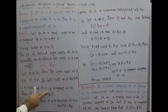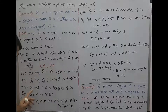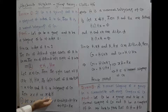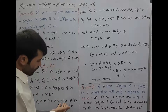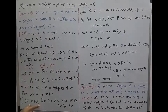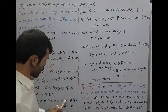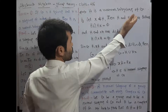Since X belongs to G and H is a subgroup of G, then either X belongs to H or X does not belong to H. Case 1: assume X belongs to H. Then XH = H = HX. If X belongs to H, then the right coset and left coset are equal, which implies XH = HX. This implies H is a normal subgroup of G.